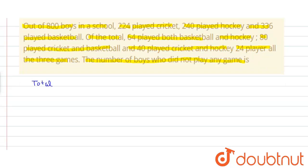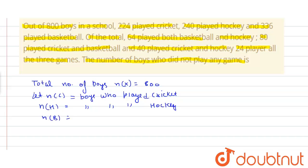So, total number of boys n(x) equals 800. Let n(C) equal boys who played cricket, n(H) equal boys who played hockey, and n(B) equal boys who played basketball.